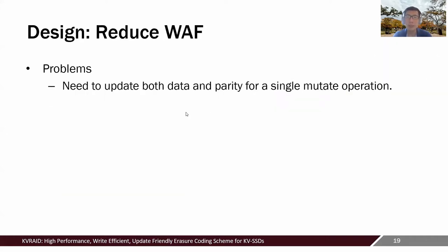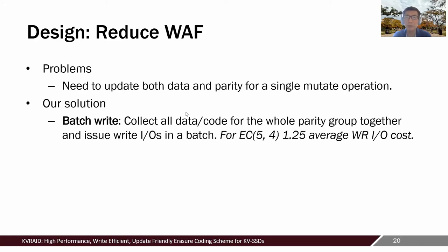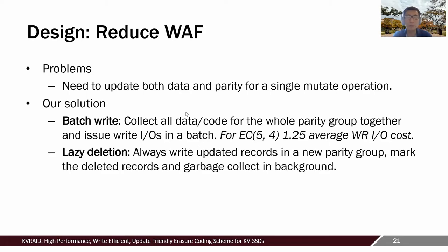The second problem is how to optimize write amplifications. When we do mutate operations such as update or delete, we need to update both data and parity objects. We propose combining batch write, lazy deletion, and garbage collection together to reduce amplification. For batch write, we wait for all the data in a parity group and issue data and parity IOs in a batch instead of reading and updating parity objects back and forth. For update requests, we always write updated data to a new parity group and mark stale objects for garbage collection in the background — this is called lazy deletion.